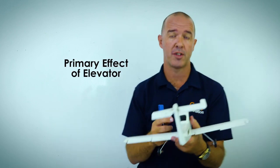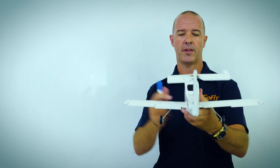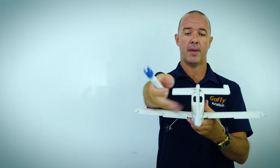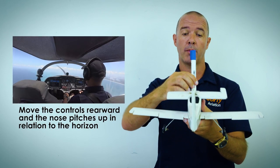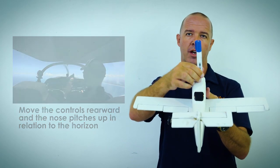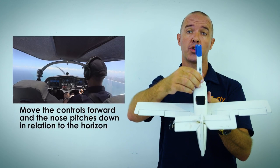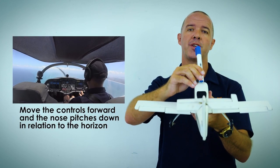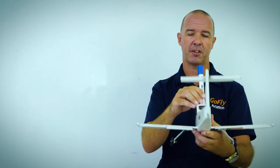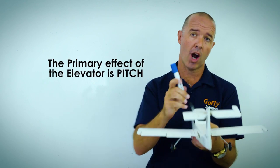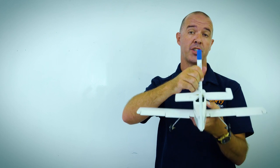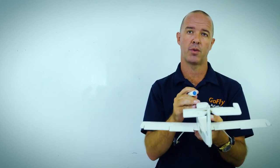The first thing we look at today is the primary effect of our elevator. Looking at the model, when I move the control column rearward, the nose pitches up in relation to the horizon and the gap between the nose and the horizon gets smaller. When I move the control column forward, the nose pitches down and the gap gets bigger. So we can say the primary effect of our elevator is pitch — the nose will pitch up or down in relation to the horizon.